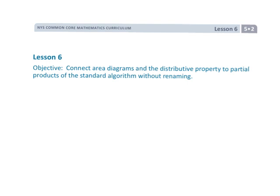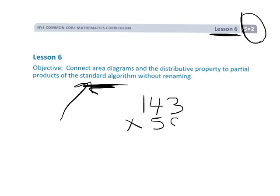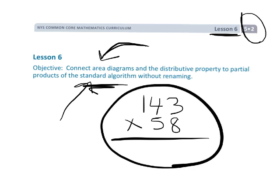This is Grade 5, Module 2, Lesson 6, where we are continuing with teaching students how to do that standard algorithm of multiplication, like 143 times 58, doing that classic multiplication. But we're going to be doing it through the area diagram so that students have this visual that they can use to then ultimately understand that standard algorithm, because we don't want students just memorizing it. We really want them to understand what it means.